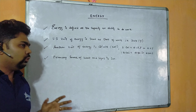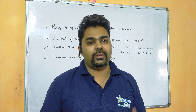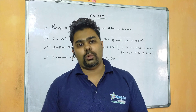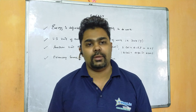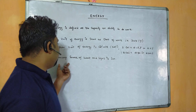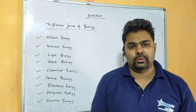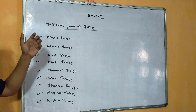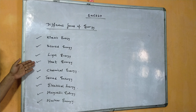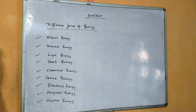Our universe is run by the Sun, which is considered the primary source of energy. It provides heat and light to every person, plant, and element. There are different forms of energy: kinetic energy, potential energy, light energy, heat energy, chemical energy, sound energy, electrical energy, magnetic energy, and nuclear energy.